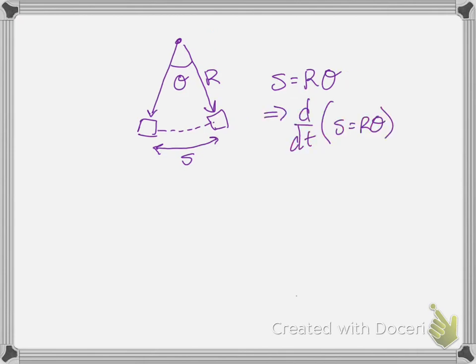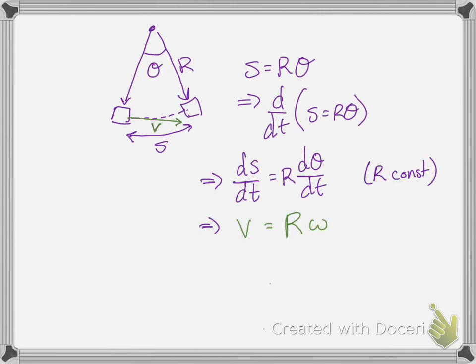Now I want to take the time derivative of s equals r theta — in other words, take the derivative with respect to time of both sides — and recognize that s can change with time because we can go farther around the circle, and theta will change with time, but r is a constant. So you can pull that constant out front, and what you get is ds/dt equals r dθ/dt, because r is a constant.